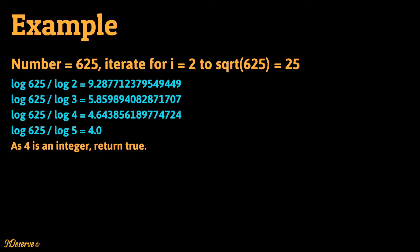We can see calculations for all the iterations here. For i equal to 5 we get log 625 by log 5 as 4 which is an integer hence return true.